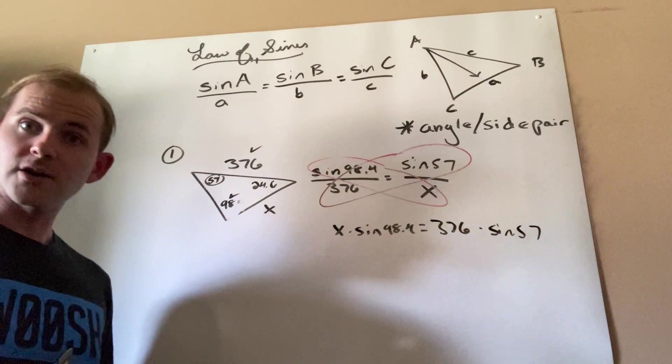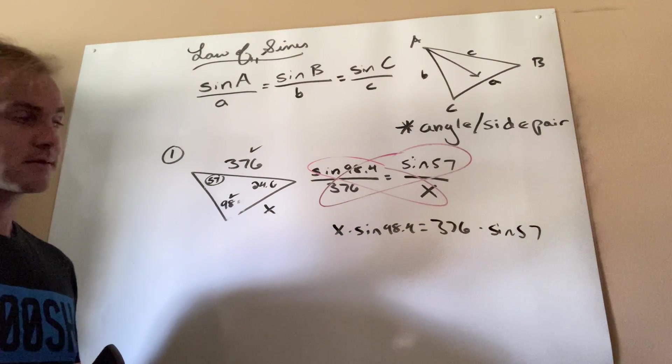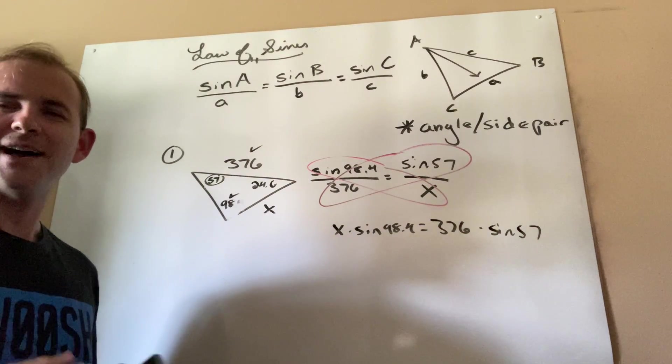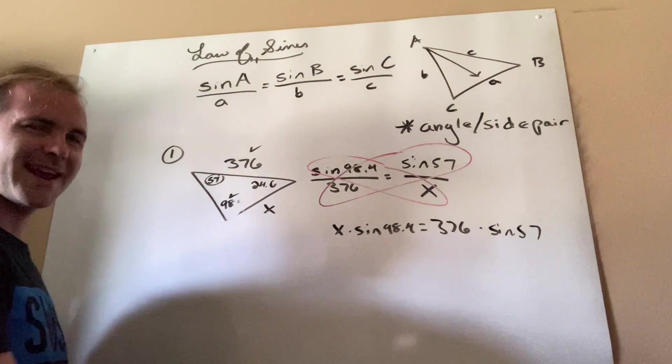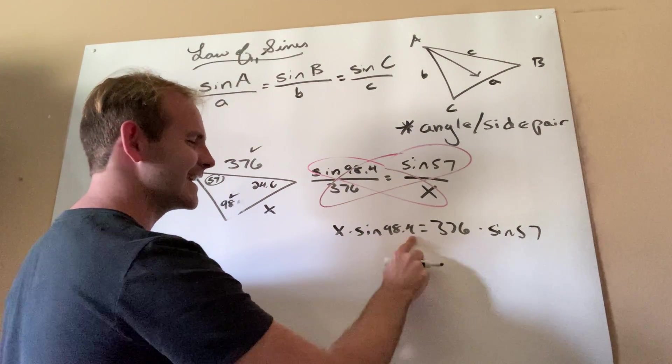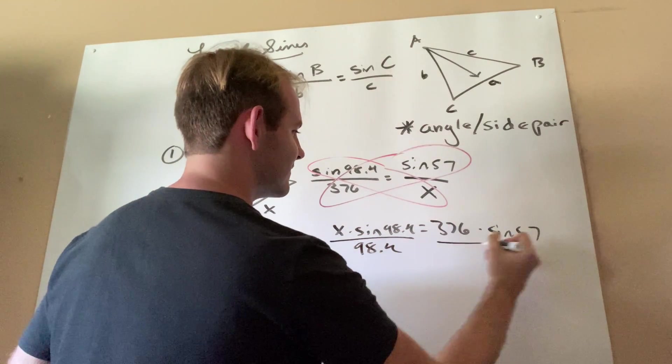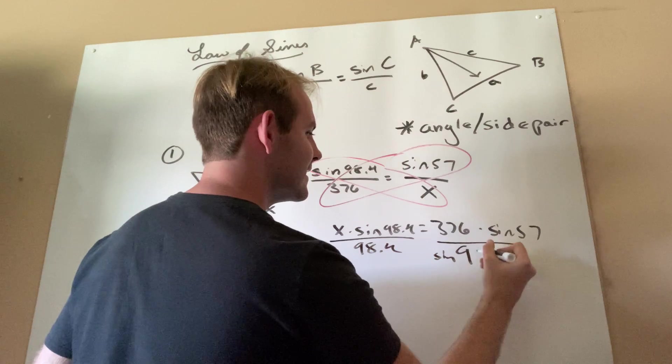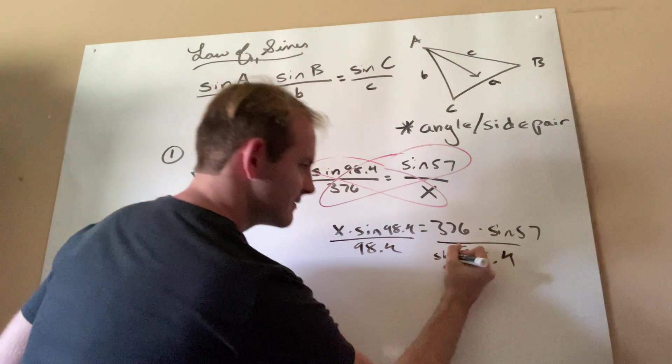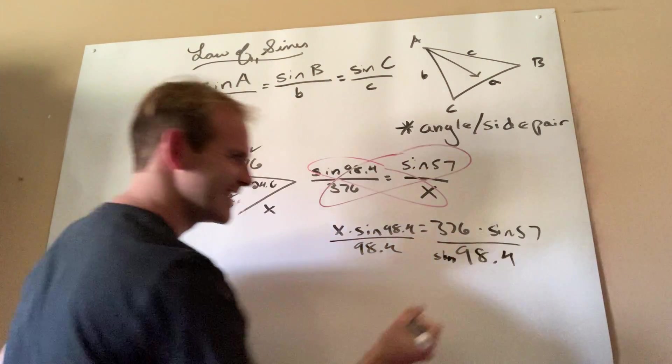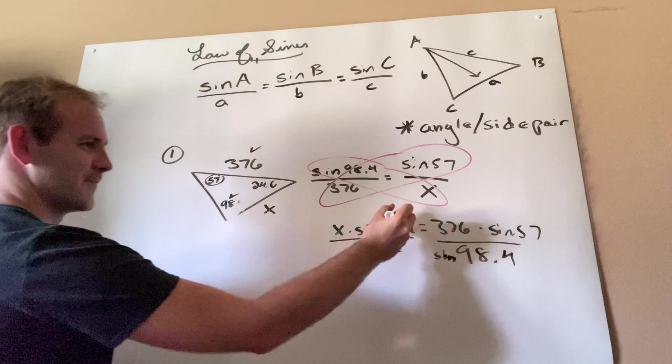Now, as with any equation, what's my ultimate goal? Well, I want to get X by itself. So how do I get rid of a multiplied sine 98.4? I'm going to divide both sides by sine 98.4.